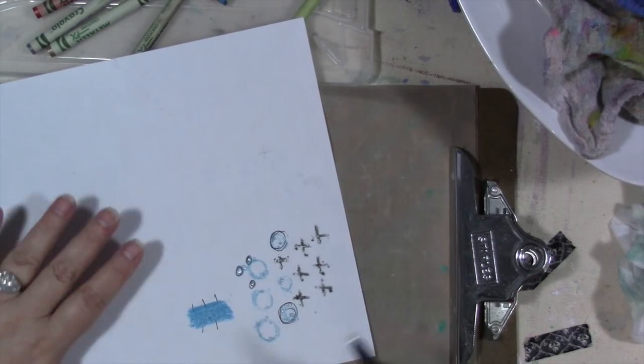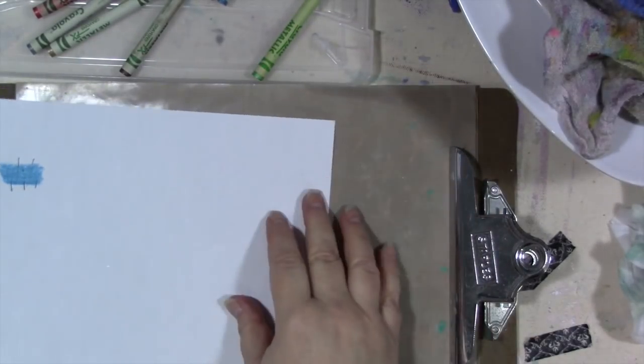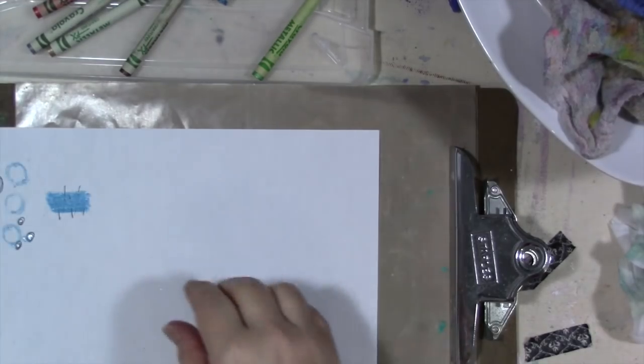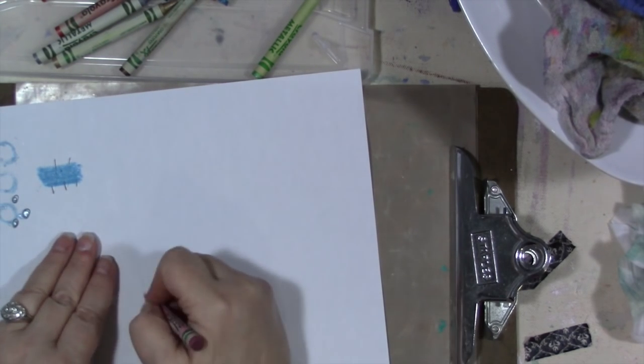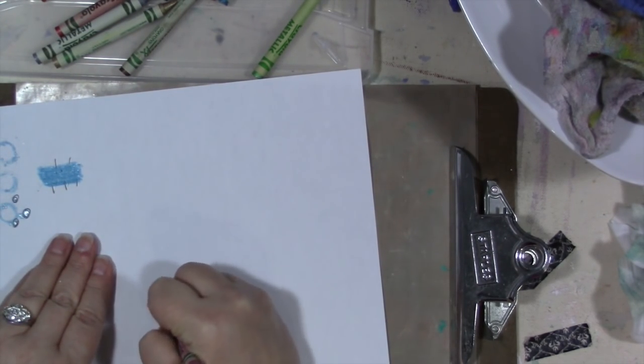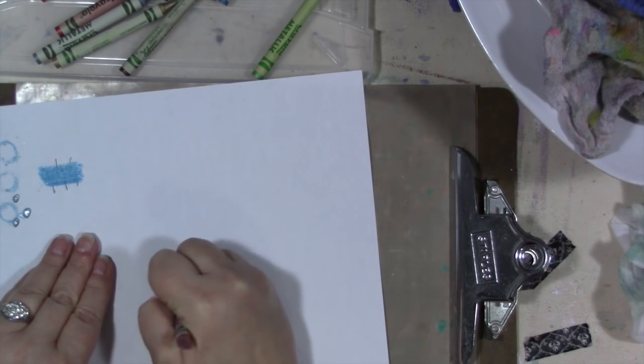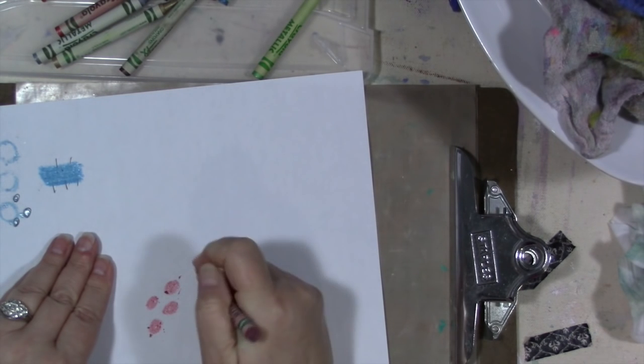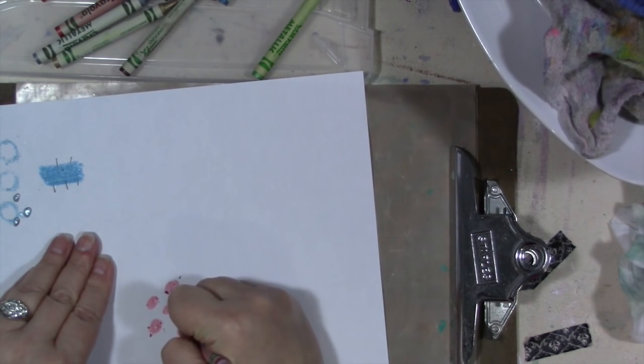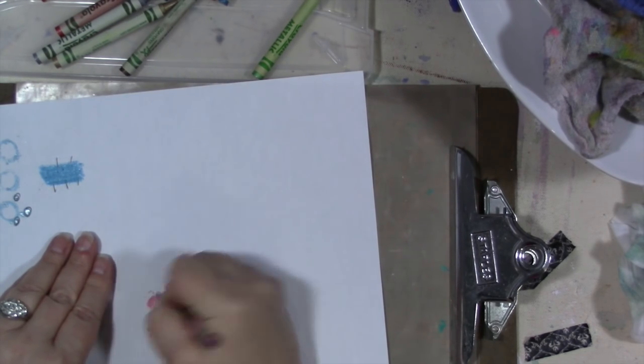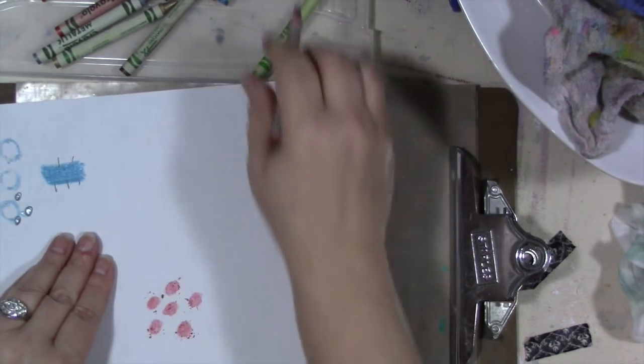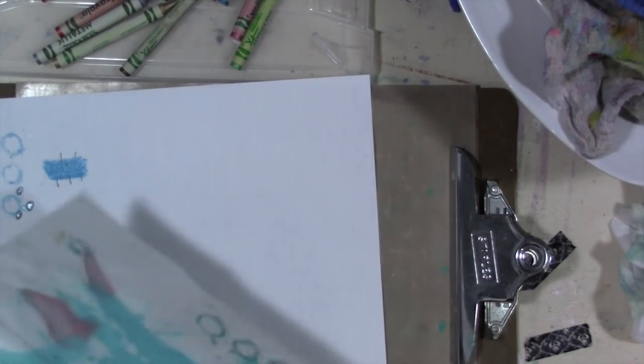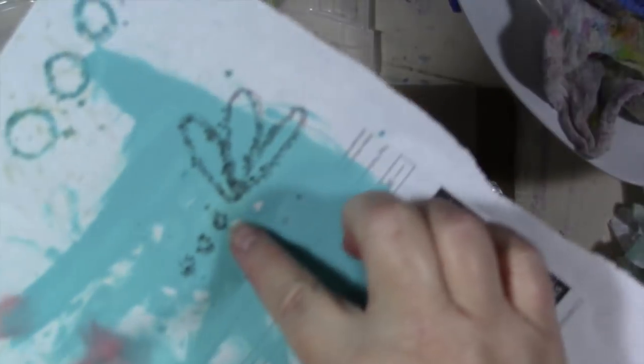Now the other way that you can do this is paper to paper. So let's do paper to paper. Again, doodle a design with your crayons. Push kind of hard, get a good coverage of wax. Now most of the wax is going to stay on the paper that you color it on, but some will transfer to the other piece.